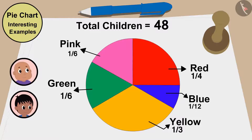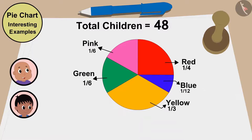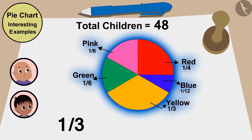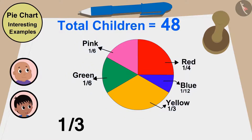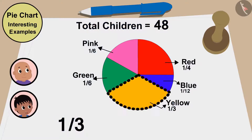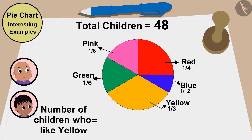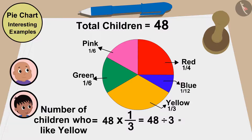Bablu says, 'Look Raju, after seeing this pie chart, it seems that the largest number of children like yellow. This is one third of this pie chart. But how do we know how many children like this color?' Raju explains, 'We have created this pie chart with the information from 48 children, and one third of these children liked yellow. So the number of children who like yellow will be 48 multiplied by one third, or 48 divided by three — that is, 16 children.'